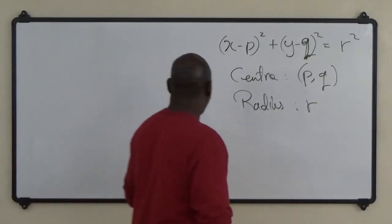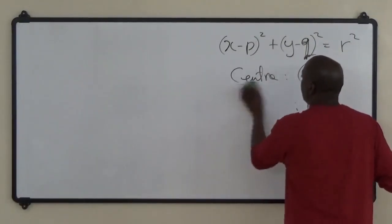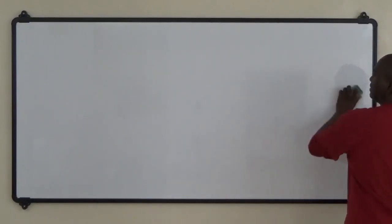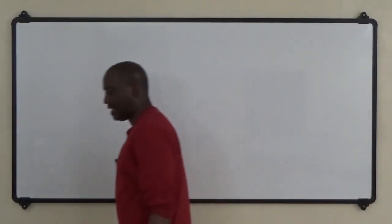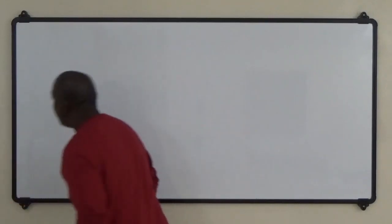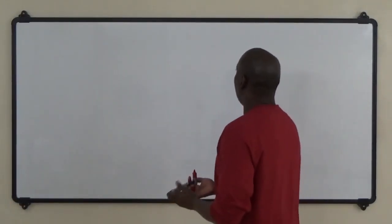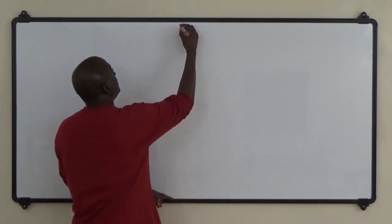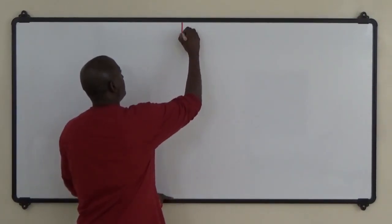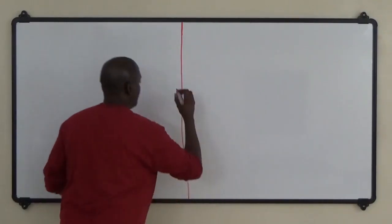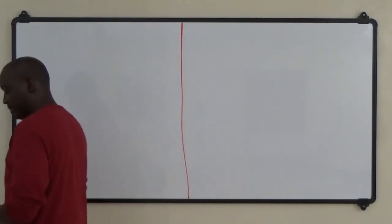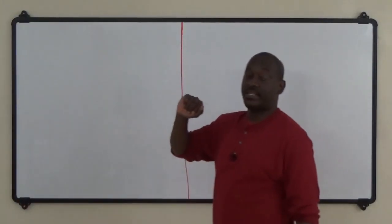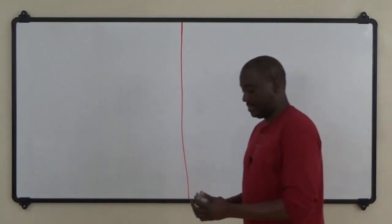We're going to start by dividing the board into two segments — that's the advantage of having a nice wide board. On the one side we have the standard form of the equation of a circle.